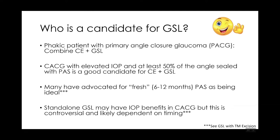Who is a candidate for GSL? Phakic patients with primary angle closure glaucoma would be a candidate combined with cataract surgery. Chronic angle closure glaucoma with elevated intraocular pressure and at least 50% of the angle sealed with PAS would be a good candidate for combined cataract surgery with GSL. Many colleagues advocate concentrating GSL on patients who have fresh PAS, formed within 6 to 12 months, though it's not always clear when the PAS were formed.